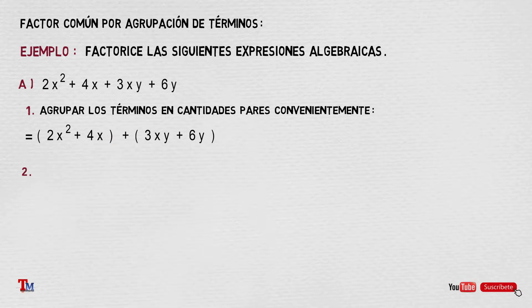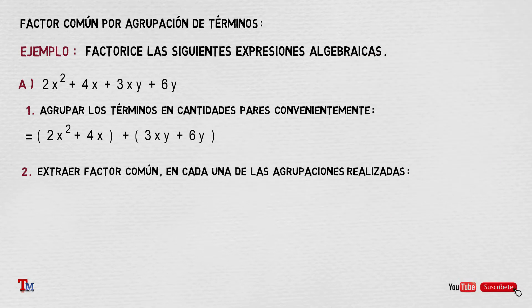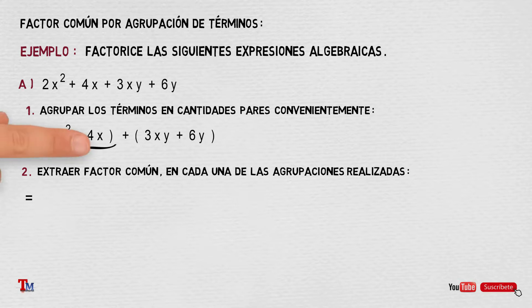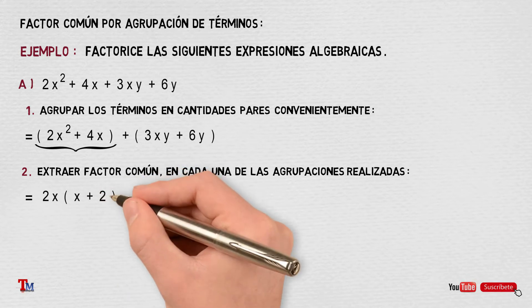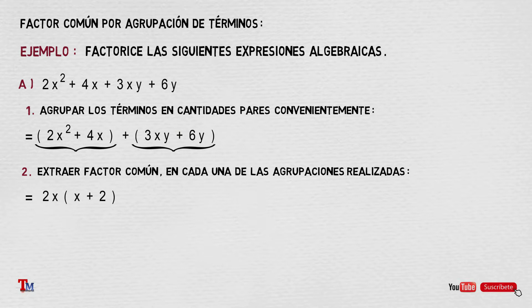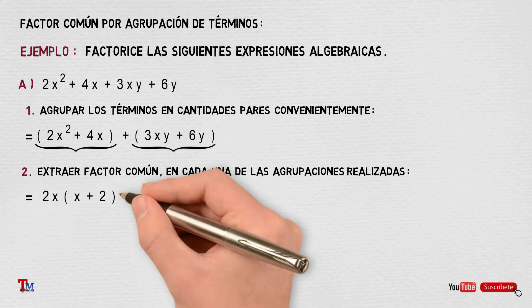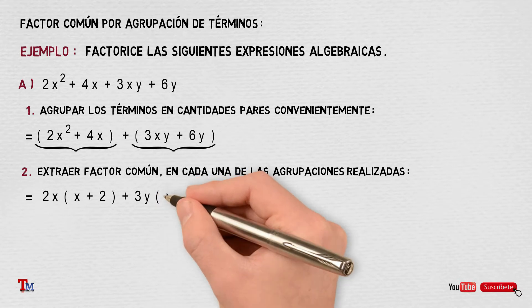Paso número 2: Extraer factor común en cada una de las agrupaciones realizadas. El proceso para extraer el factor común en ambos casos es número y variable; si tienes alguna duda, te dejaré el link en la descripción del video. El máximo común divisor entre 2x² y 4x es 2x, que multiplica a x más 2. El máximo común divisor entre 3xy y 6y es 3y, que multiplica a x más 2.